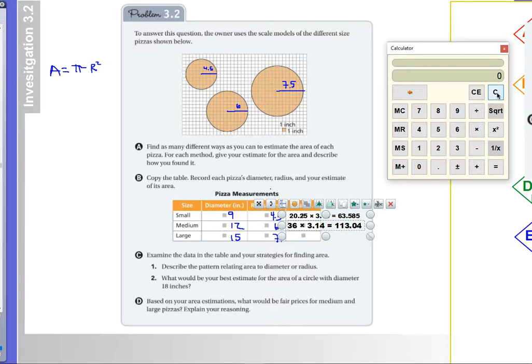Now for our last pizza, we have a radius of 7.5. So 7.5 squared times 3.14. And we get something that does not seem to, oh, because there is no decimal place. Okay, so let's try that again.